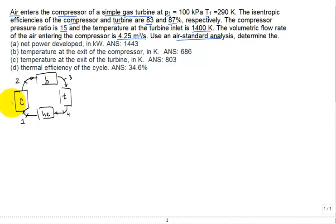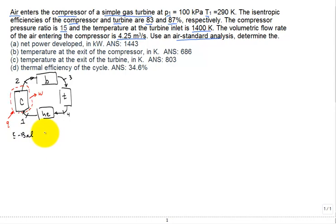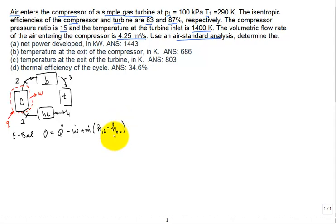For each component, we perform a control volume analysis. We use the standard direction for Q coming into the control volume and work per unit mass flowing out. The general steady-state energy balance is: zero equals Q-dot minus W-dot plus mass flow rate times the enthalpy coming in minus the enthalpy exiting that control volume, neglecting kinetic and potential energy effects.